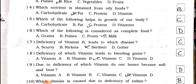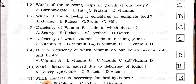Number five: which of the following helps in growth of our body? A) Carbohydrate, B) Fat, C) Protein, D) Vitamins. Answer is option C — Protein. Number six: which of the following is considered as complete food? A) Grains, B) Pulses, C) Fruits, D) Milk. Answer is option D — Milk. Number seven: deficiency of Vitamin B leads to which disease? A) Scurvy, B) Rickets, C) Beriberi, D) Goiter. Answer is option C — Beriberi.